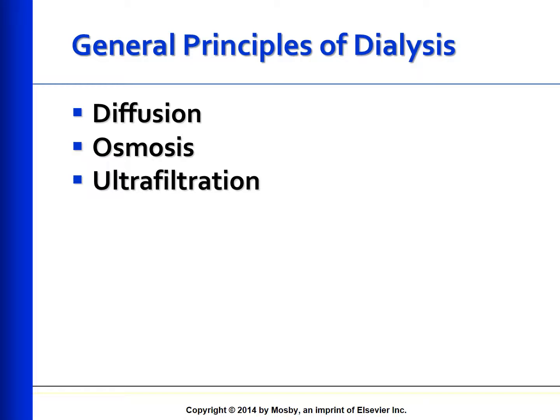Diffusion is the movement of solutes from an area of greater concentration to an area of lesser concentration. In kidney failure, urea, creatinine, uric acid, and electrolytes such as potassium and phosphorus move from the blood to the dialysate. RBCs, WBCs, and plasma proteins are too large to diffuse through the pores of the membrane.